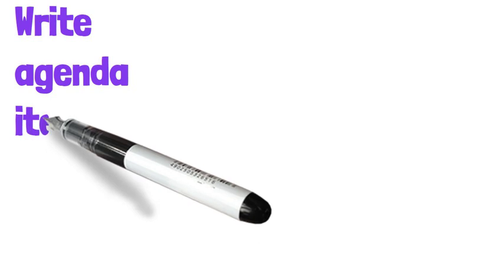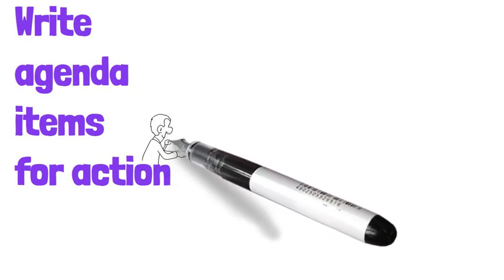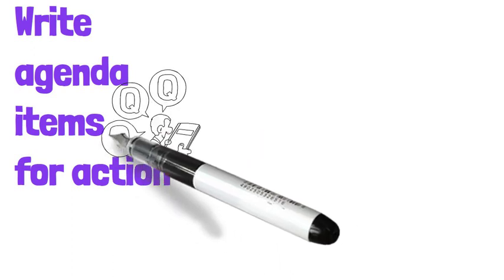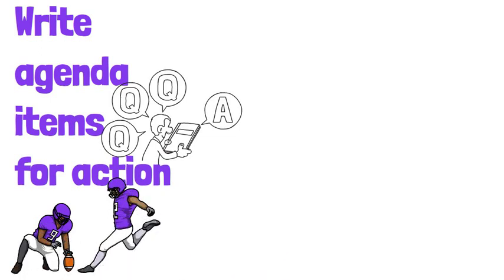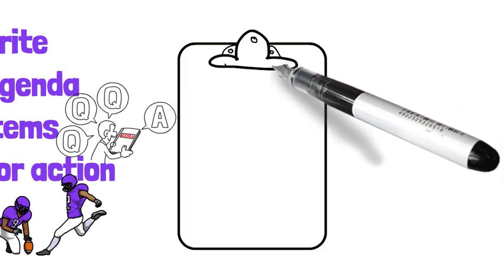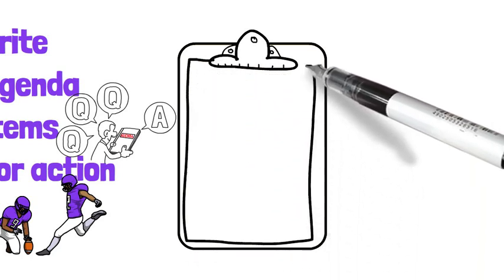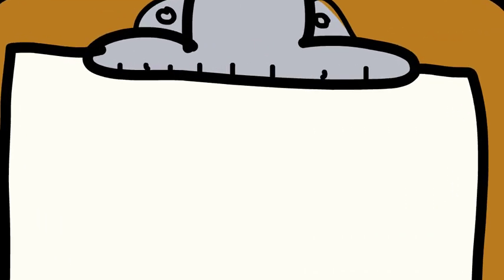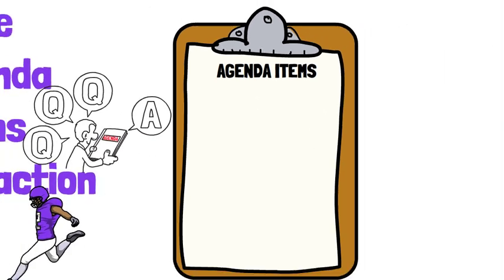Fourth, write agenda items for action. Instead of putting together an agenda that is just a long list of items to discuss, think about the agenda as a group of questions to be answered. Populating the agenda with questions can bring about a shift in the way people think and approach things, giving the meeting a more strategic nature. Additionally, this approach encourages attendees to be more purposeful. By asking questions, it's easier to decide who should be invited, and you know when the meeting should end — when the questions have been addressed to everyone's satisfaction.